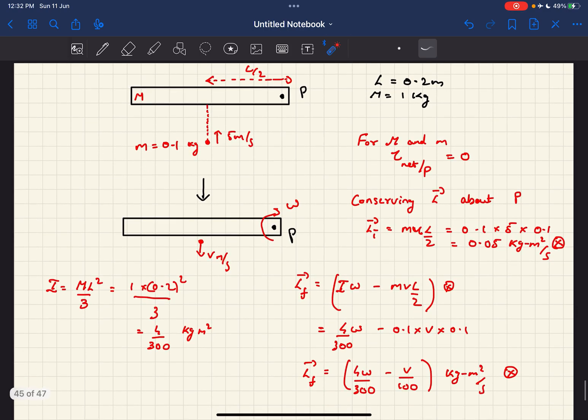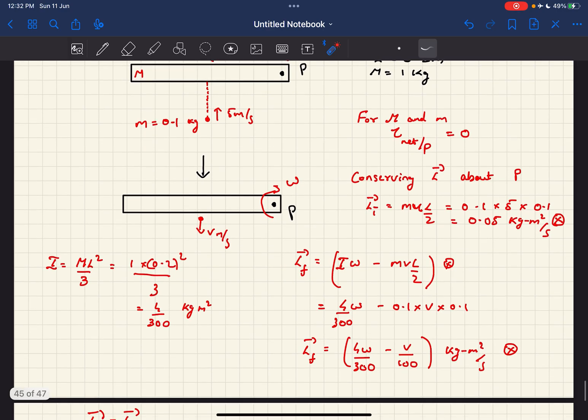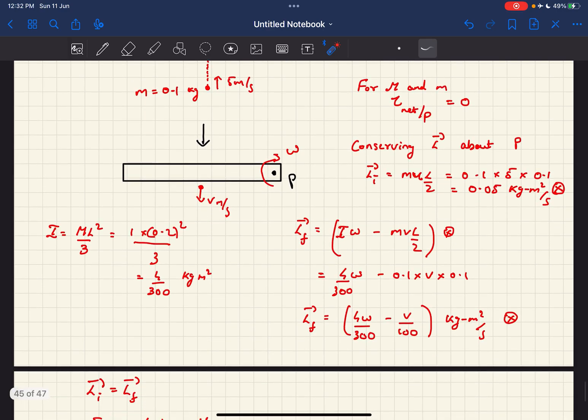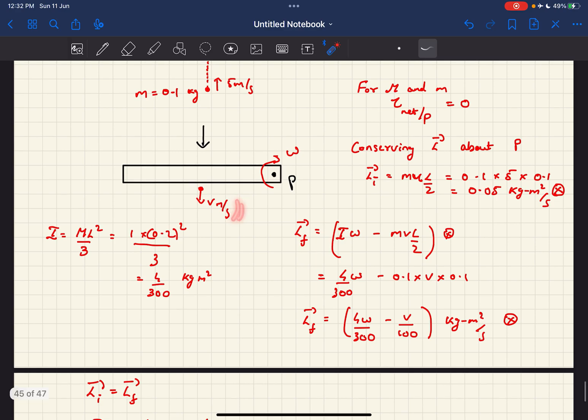Now just after collision, the angular momentum of the system would be Lf, and that would be because of the contributions from the rod as well as from the small mass. Just after collision, let's assume this rod rotates with an angular velocity of omega, and it is given in the question that the small mass moves away from the point of collision with a velocity of v in the same direction.